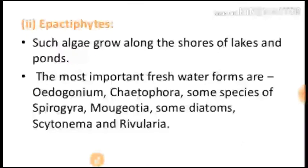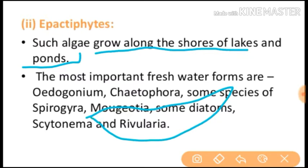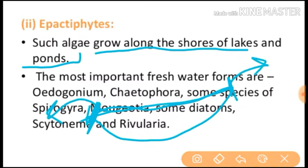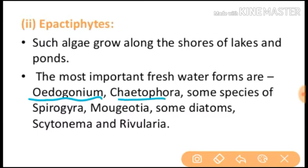The next type is opaciphytes. Such algae grow along the shores of lakes and ponds. For example, imagine a lake — algae found along the left or right shore portion of the lake are called opaciphytes. The most important freshwater forms are Oedogonium, Zygnema, some species of Spirogyra, Mougeotia, some diatoms, and others.